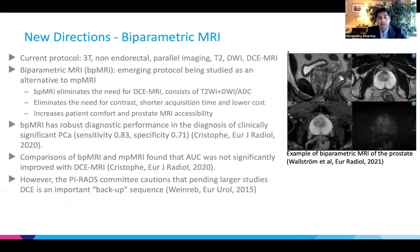Another direction for prostate cancer MRI is biparametric MRI. The current protocol uses 3 tesla MRI without an endorectal coil, with T2-weighted imaging, DWI, and DCE-MRI sequences. Biparametric MRI eliminates DCE-MRI and uses only T2-weighted imaging and DWI/ADC. This has the advantage of being cheaper, shorter, and more comfortable for the patient, while still performing robustly in diagnosing clinically significant prostate cancer with high sensitivity and specificity. However, the PIRADS committee has not yet endorsed biparametric MRI because DCE still plays an important role as a backup sequence when T2-weighted imaging and DWI/ADC are ambiguous or difficult to interpret.